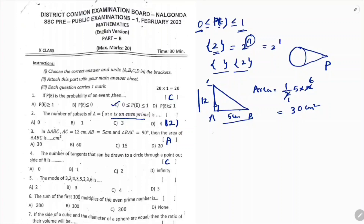The mode of the observations: looking at the data — 3, 2, 4, 3, 5, 2, 3, 6 — the observation 3 is repeating the most number of times, so the mode is 3. The correct option is B.